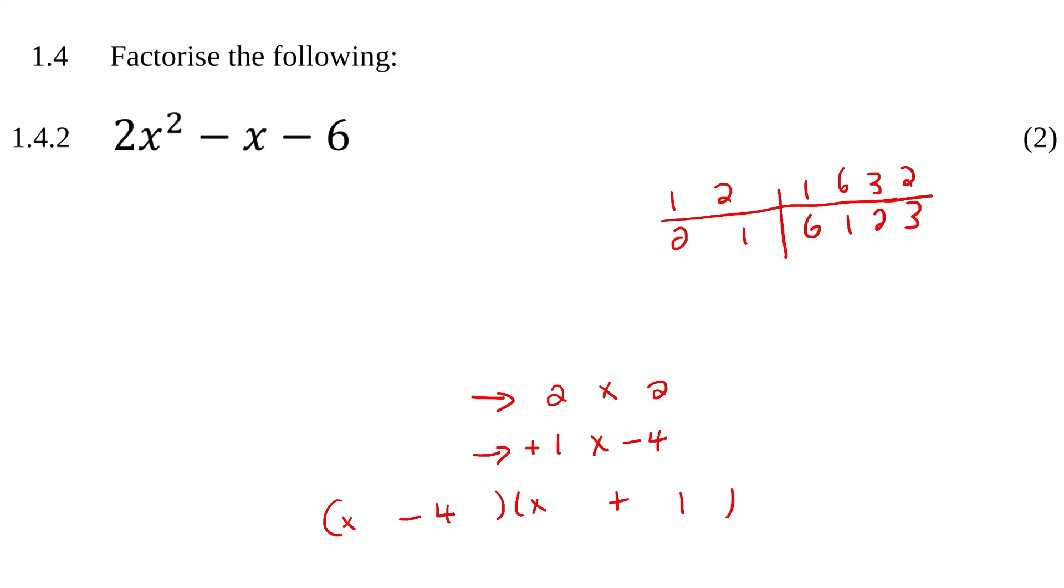That method does work, of course, but I found a better way that works quite nicely. So what you do is you write it as x squared minus x instead, and then you take this number and you multiply it with that one. So it becomes minus 12.